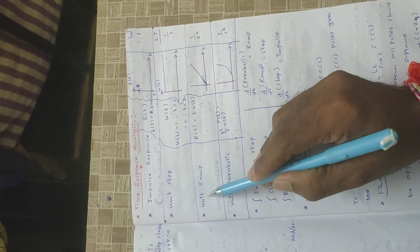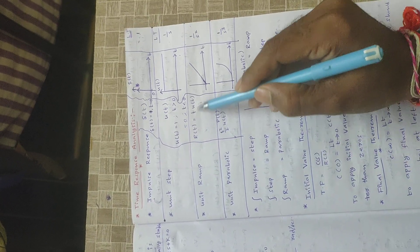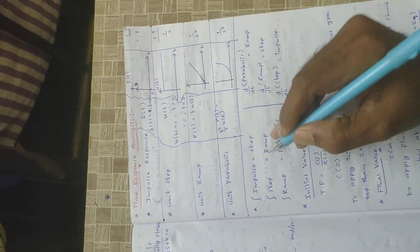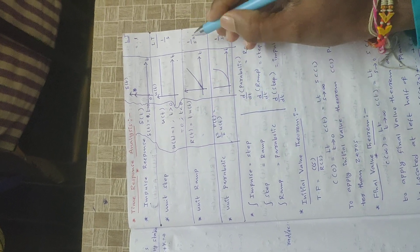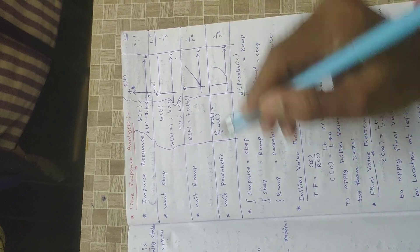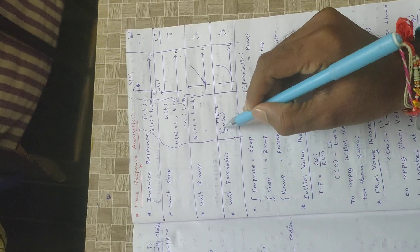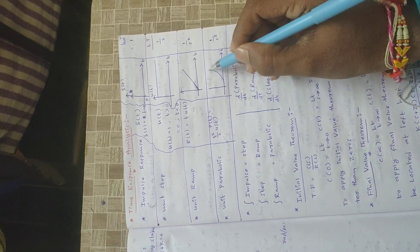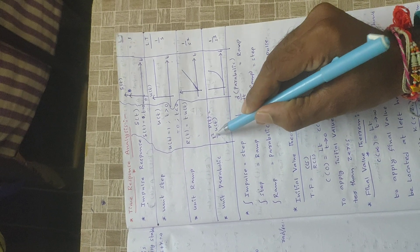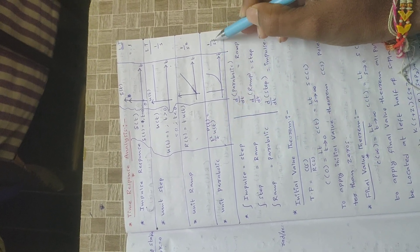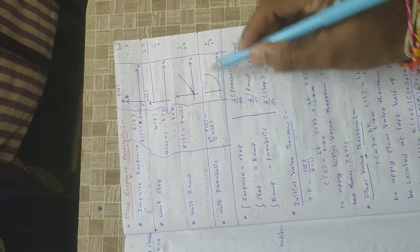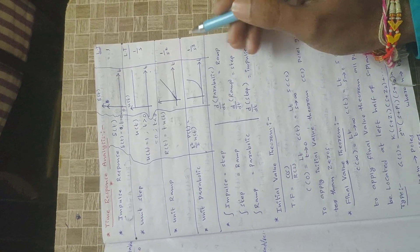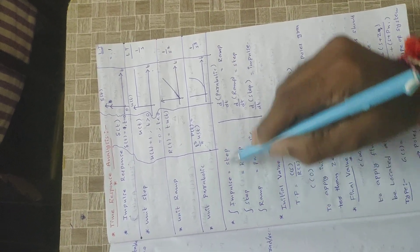Next, the unit ramp function r of t equals t into u of t. The Laplace transform of the ramp function is 1 by s squared. Next, the unit parabolic function is t squared by 2 into u of t. The Laplace transform of the parabolic function is 1 by s cubed, derived from n factorial divided by s to the power n plus 1, where n equals 2, giving 2 factorial by 2 into s cubed, which simplifies to 1 by s cubed.